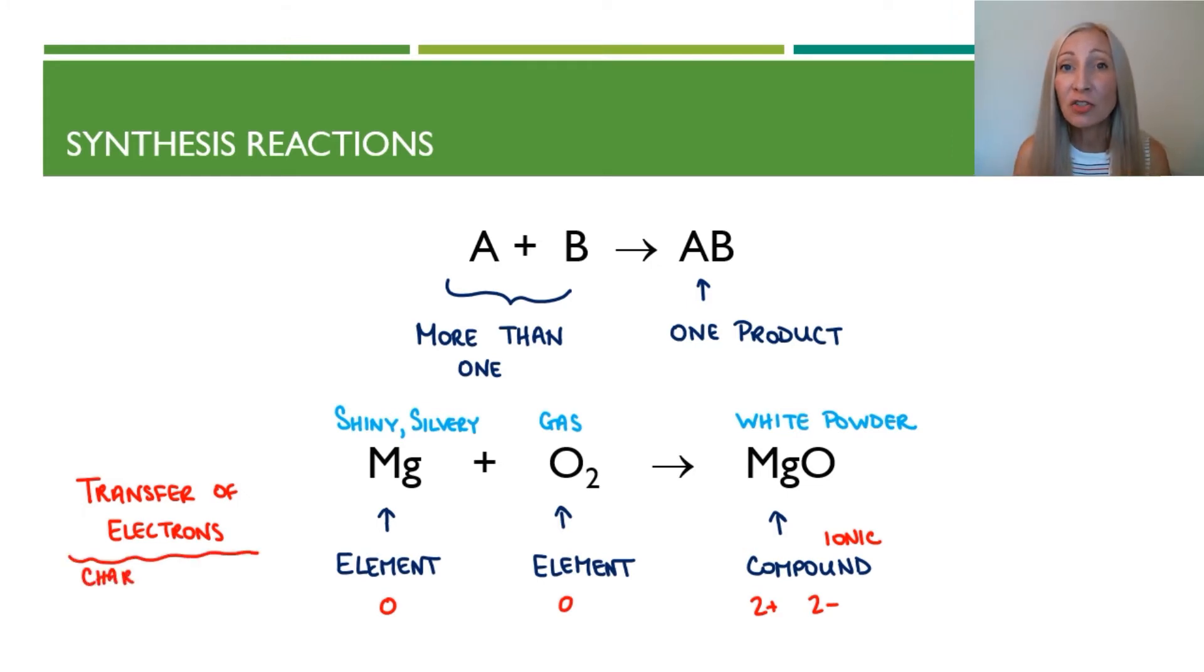When the charges change during a chemical reaction, that's because there was a transfer of electrons. Magnesium lost electrons and oxygen gained electrons. This is also an oxidation-reduction reaction. And you're going to find that many of the types of reactions we go over are also oxidation-reduction reactions. Oxidation is when electrons are lost, and reduction is when electrons are gained. And they go together in this reaction.